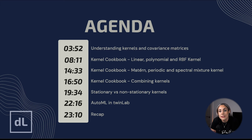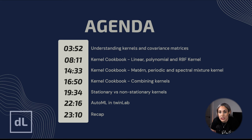Let's break down what to expect in this video. We'll take a step-by-step approach to understand kernels and covariance matrices. We'll begin by laying the groundwork, explaining what kernels are and how they relate to covariance matrices. Then we'll dive into the practical applications with the kernel cookbook, exploring different kernel types and their uses. We'll explore how to combine kernels through multiplication and addition, discuss stationary and non-stationary kernels, and finally touch on AutoML in TwinLab, examining how kernels are selected automatically.